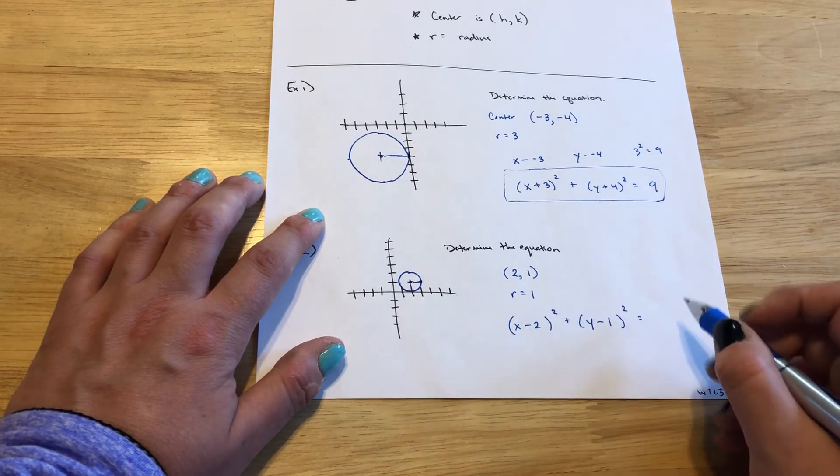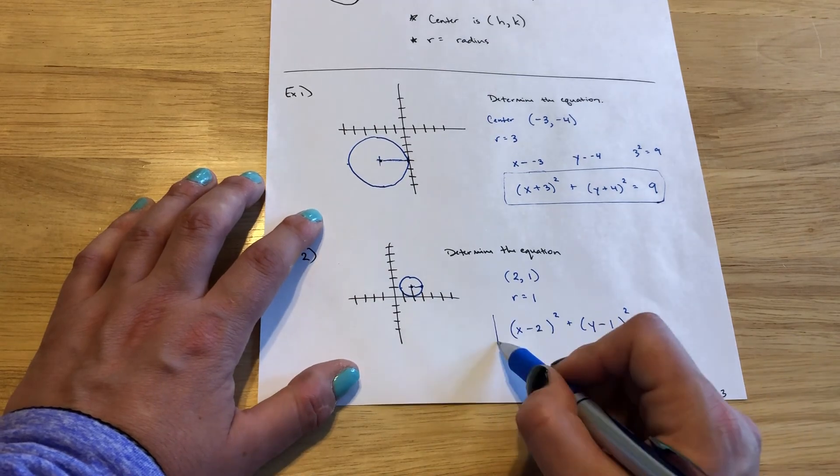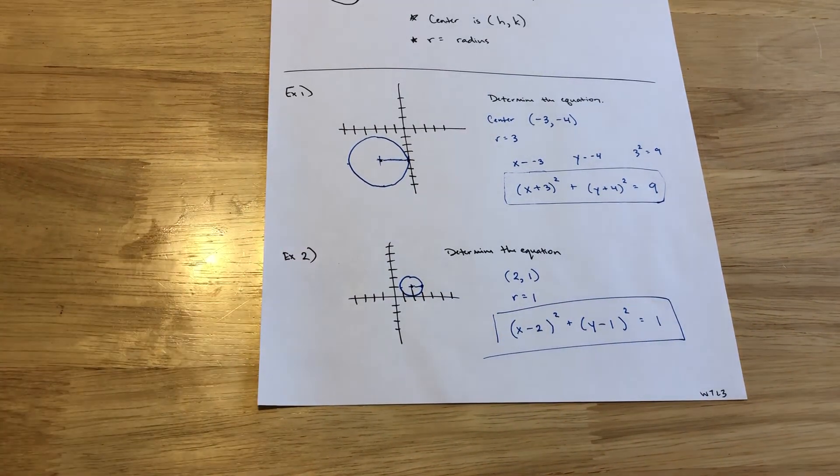And it's equal to r squared. 1 squared is just 1. So that would be our final equation for that circle.